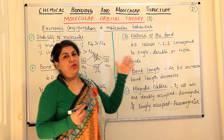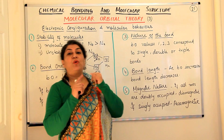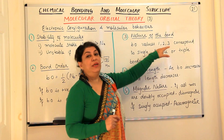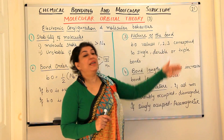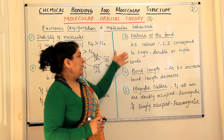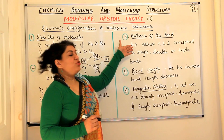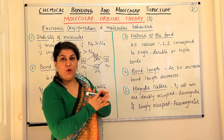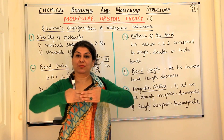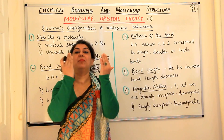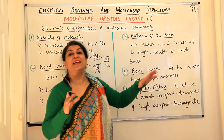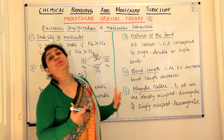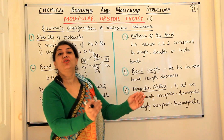The third point is the nature of the bond, which is related to bond order. Bond order 1 means one covalent bond, bond order 2 means a double bond, and bond order 3 means a triple bond between two atoms. Bond length also depends on bond order. Larger the bond order, greater the number of bonds, and the atoms are pulled closer together. So a double bond is shorter than a single bond, and a triple bond is the shortest. Greater bond order means shorter bond length.